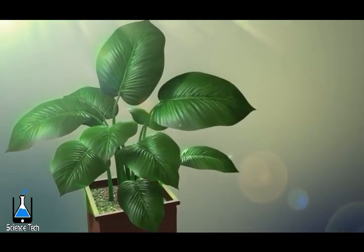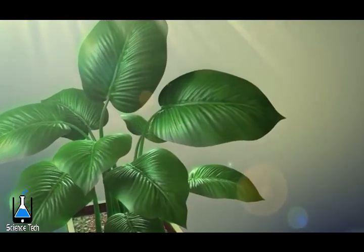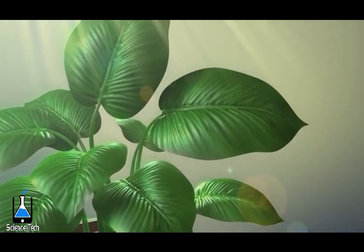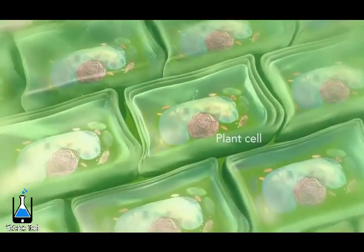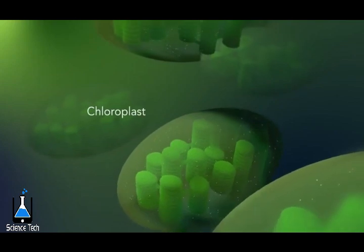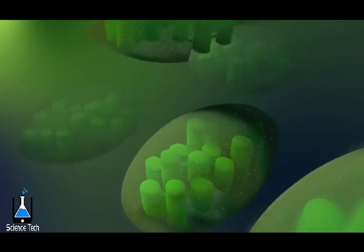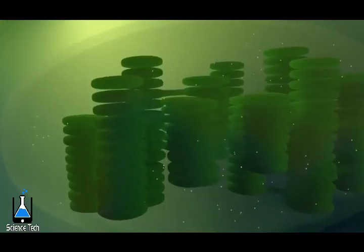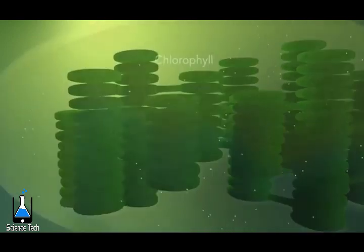Some organisms, such as plants, that are photo-autotrophic, meaning they capture sunlight for energy, have cells with an organelle called a chloroplast. The chloroplast is where photosynthesis happens. It's green because it has a green pigment called chlorophyll.